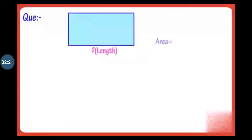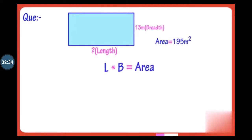Let's learn through one example. We have a rectangle whose area is 195 square meters and breadth is 13 meters, and we have to find out the length. We know that if we multiply length by breadth we get the area. Length is unknown, breadth is 13 meters, and area is 195 square meters.